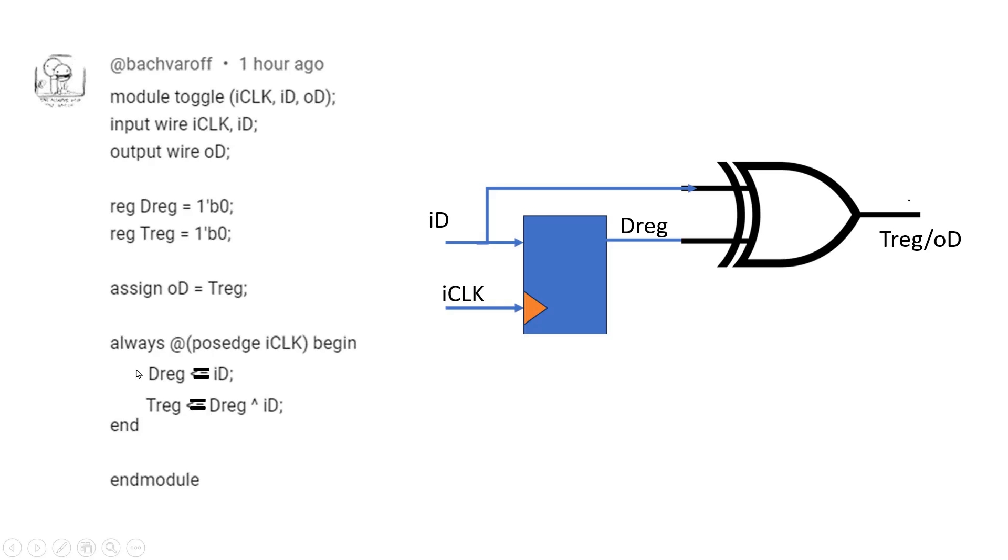This will wait for the previous statement to execute. That means it will wait for dreg to get calculated, and then along with id we will put an XOR gate to get the treg.